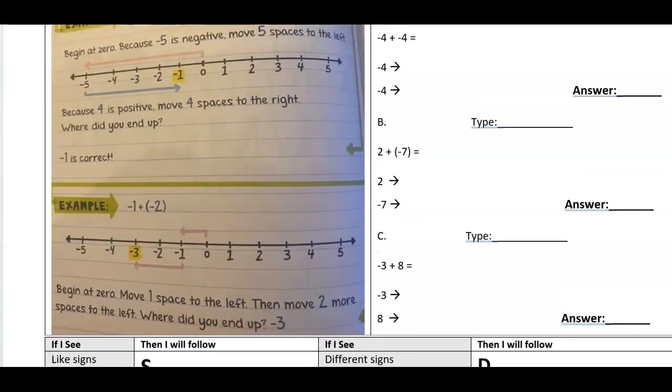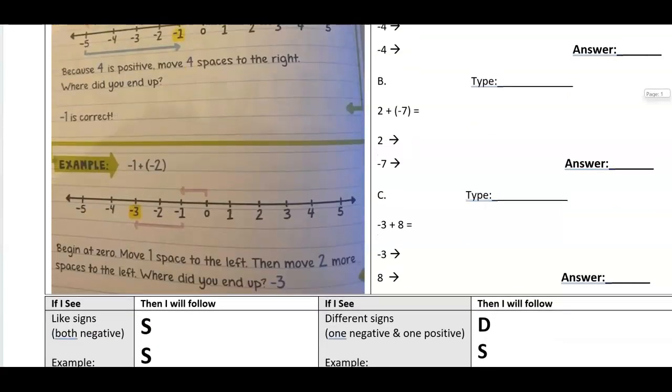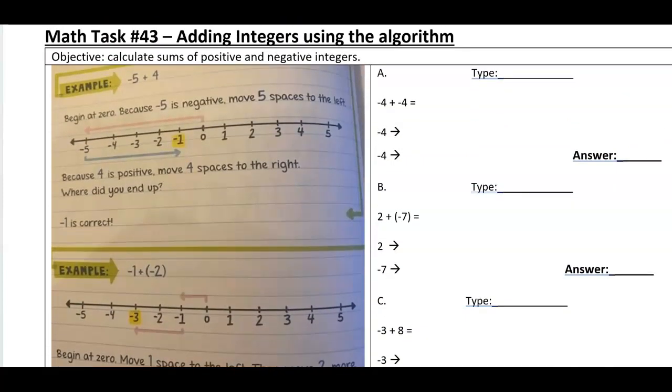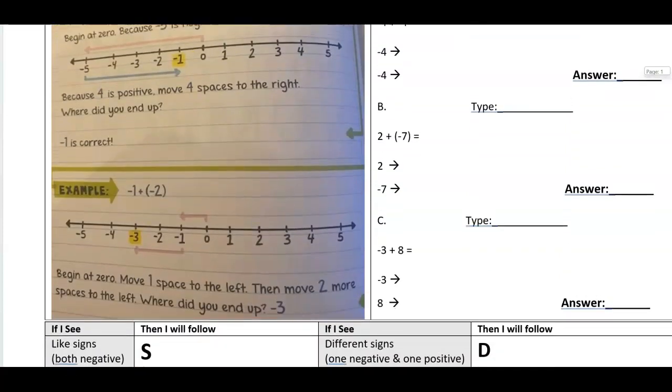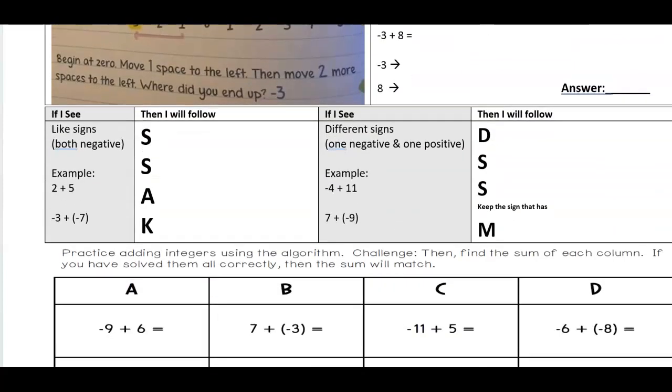And then negative one plus negative two. Negative one, you move one space to the left, and then negative two, you move two spaces to the left, and you end up at negative three. So you're always beginning at zero, and then you're moving either left or right based on whether it's positive or negative. But there's another way you can do this.